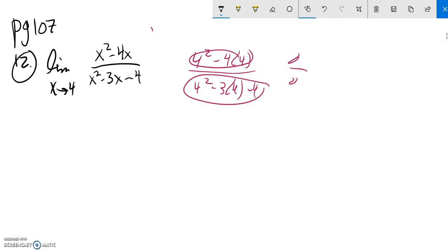I think what I'll do is just try and factor stuff. So limit as X approaches 4. Up top here, I can factor an X out. These both have an X in common. So X times X minus 4.